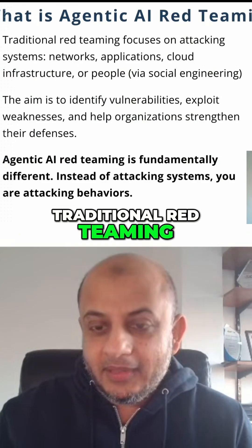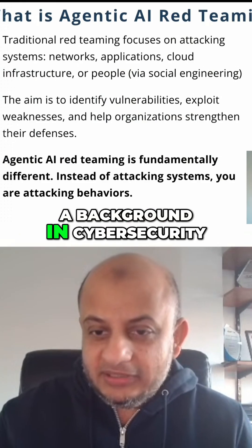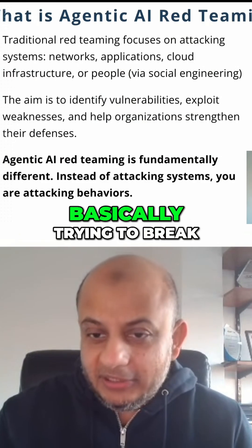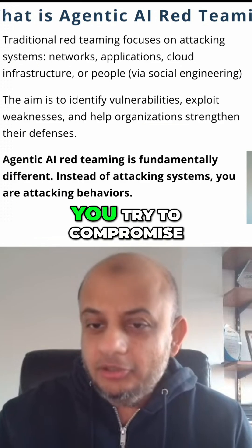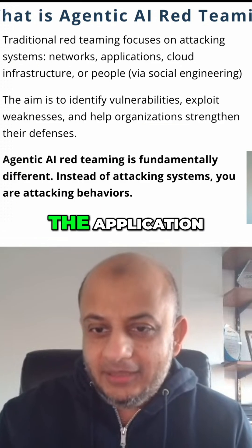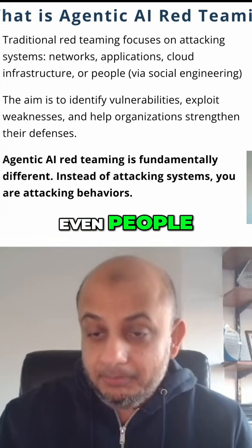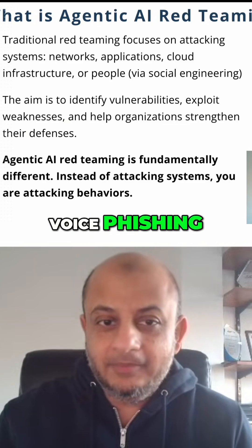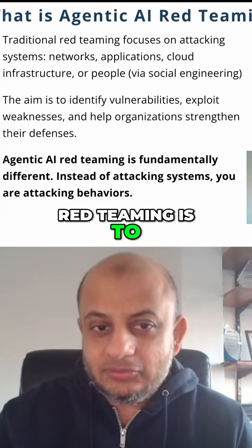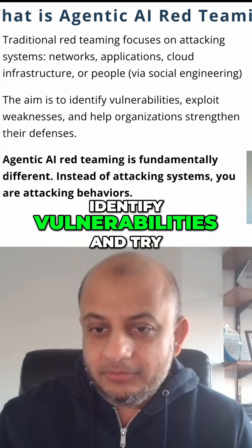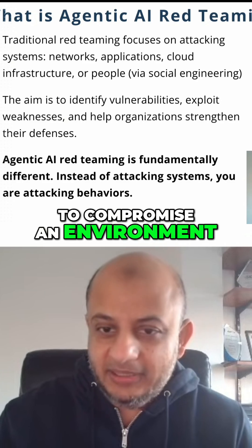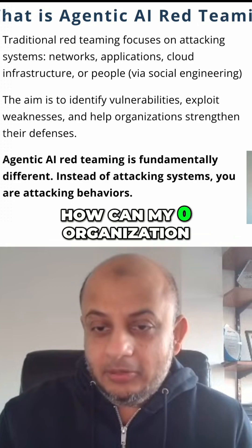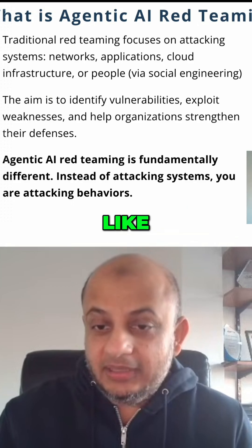Traditional red teaming — if you have a background in cybersecurity — means attacking systems, basically trying to break into an environment. You try to compromise the system, the application, even people through social engineering, phishing messages, and voice phishing. The whole point of red teaming is to identify vulnerabilities and try to compromise the environment so that the company can see what the issues are and how their organization can get compromised.